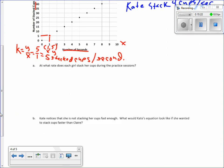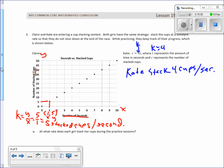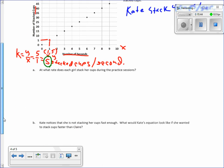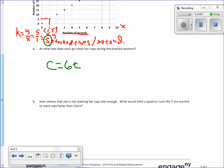Part B, if Kate notices that she's not stacking her cups fast enough, what would Kate's equation look like if she wanted to stack cups faster than Claire? Well, in order to stack cups faster than Claire, her rate has to be faster. Her rate was 4 right here. It's got to be more than 5, so let's make the rate 6. 6 is more than 5. So I would say c equals 6t. That's it. There's the equation.